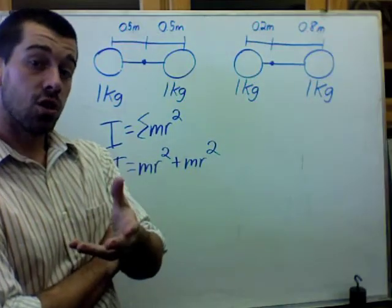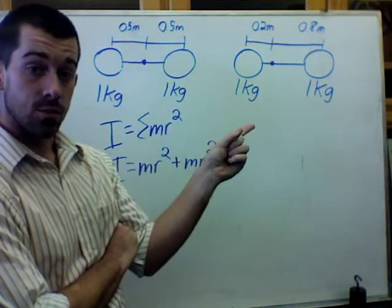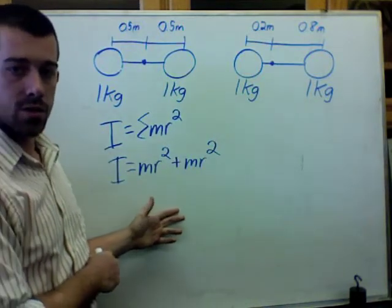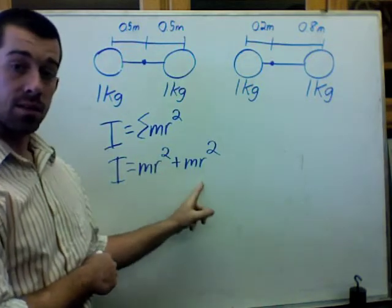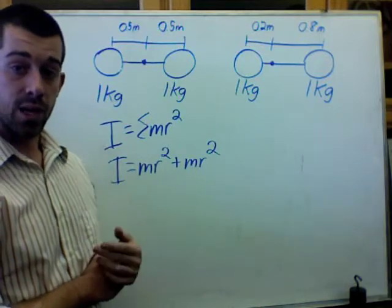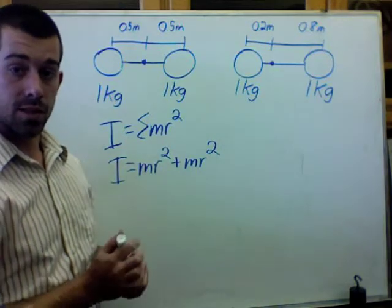Now, I'm going to solve for the second rotational inertia of the other object. I still use the same equation. I still have two masses that I'm summing the rotational inertia of. But I'm going to have different radii in this case. So let's plug that in.